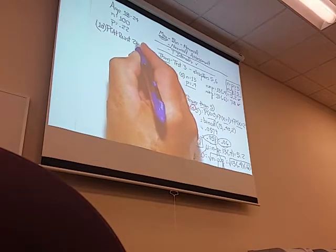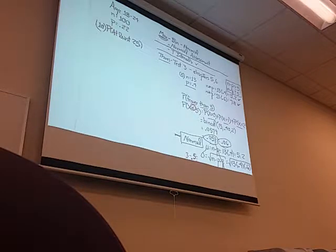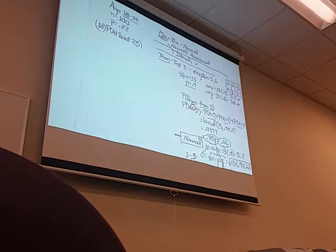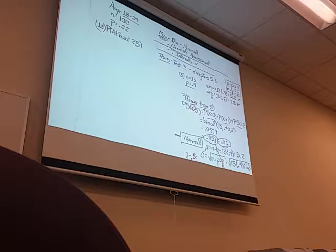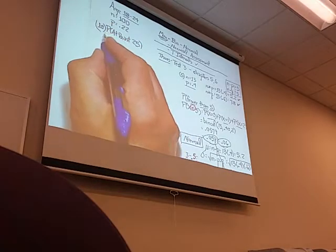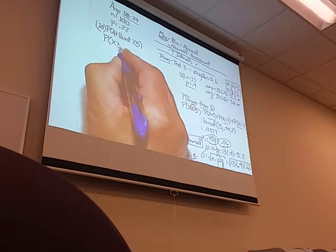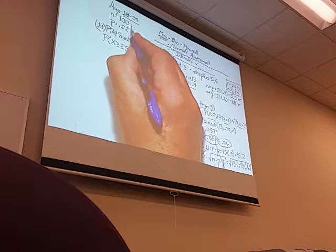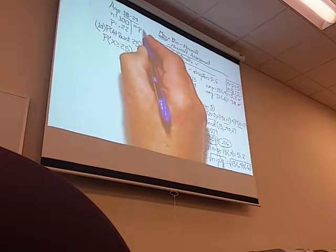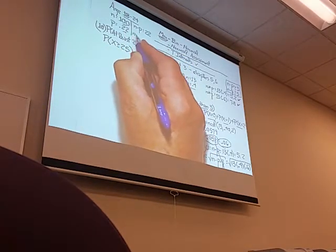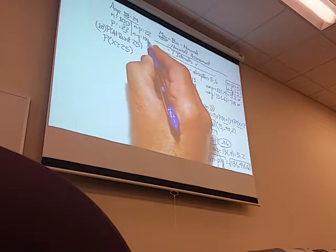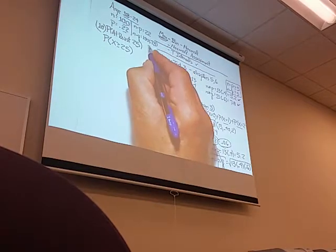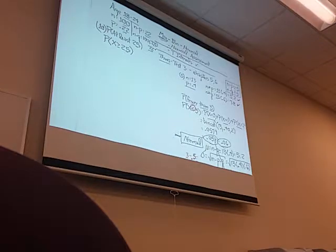Number 10 says at least 25. I can't write all that out, there's too many of them, but at least 25 means 25, 26, 27, 28 through 100. What's the probability that 25 of these aged people, 18 to 24, voted, or 26, or 27, or 28, or 29, all the way up to 100? At least, greater than or equal to 25. You definitely do not want to do this with binomial PDFs. So, first of all, let's do our check. N times P is 100 times 0.22, which is 22. N times Q is 100 times 0.78, which is 78.